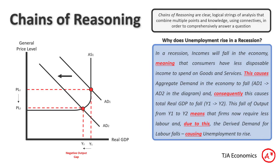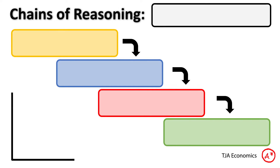If you want to practice making chains of reasoning in your own time, you can screenshot this slide — I'll also put it out on my Twitter. In the top right, there's a blank white box where you could put your essay title or the topic you're going to talk about, and boxes in which you could write your chains of reasoning. In the bottom left, there's an empty diagram on which you can draw a relevant diagram to help and improve your chain of reasoning.